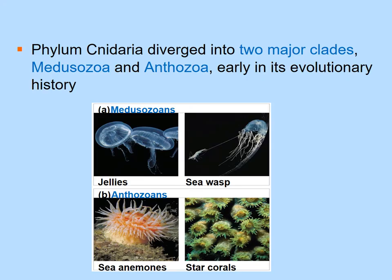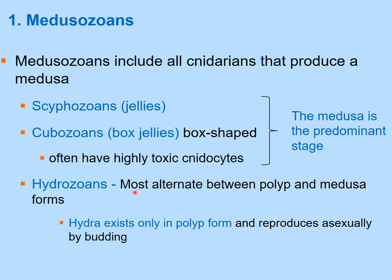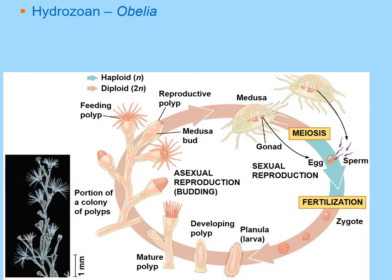Cnidarians diverge into two major clades: Medusazoa and Anthozoa. Medusazoa have a medusa stage in their life cycle; Anthozoa may or may not. In the medusa stage — the motile form — sexual reproduction occurs. Gonads produce either eggs or sperm; fertilization creates a zygote, which develops into a larval stage called the planula.